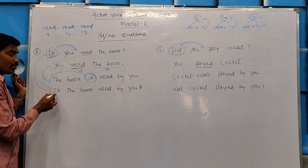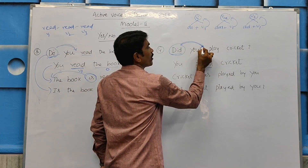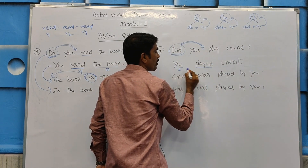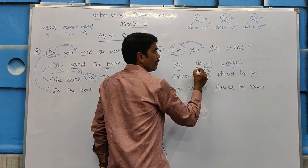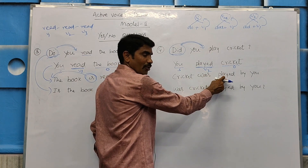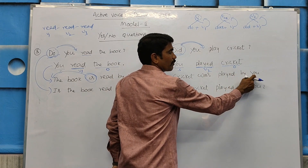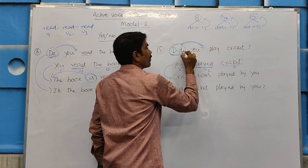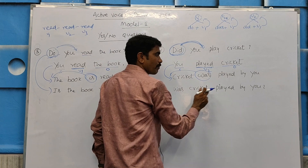Did you read the book? Did you play cricket? Did you play cricket? This uses 'did,' so V2 covered. 'Play' — this is the verb, this is the object. Passive: Am, Was, Were plus V3. Cricket was played by you. Cricket was played by you. Now we can talk about the game. The question form: was cricket played by you?